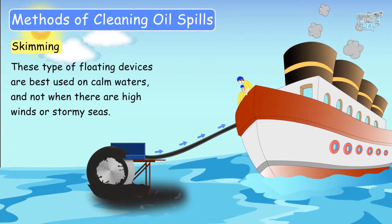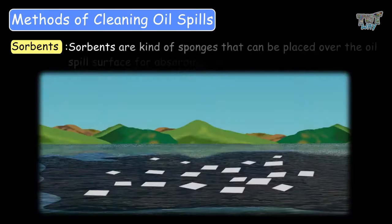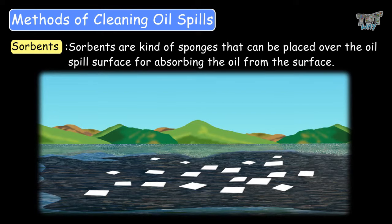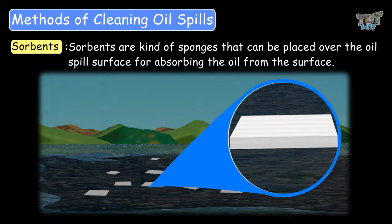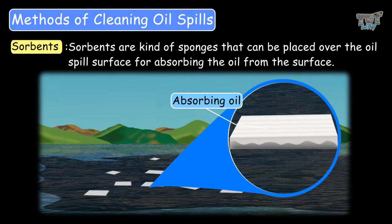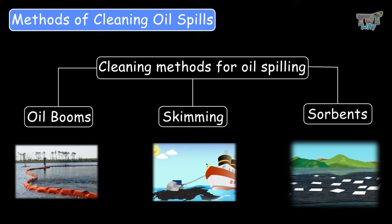Another popular method is using sorbents. Sorbents are a kind of sponge that can be placed over the oil spill surface to absorb the oil from the surface. These are the three methods involving the physical equipment to deal with oil spills.